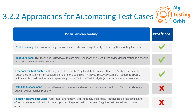The next disadvantage is missed negative test cases. Important negative test cases may be missed. Negative tests are a combination of test procedures and test data. In an approach targeting test data mainly, negative test procedures may be missed. Data-driven testing primarily targets test data variations, so in our login example, if you only provide valid usernames and passwords in the data file, you might miss testing how the system handles incorrect login attempts.